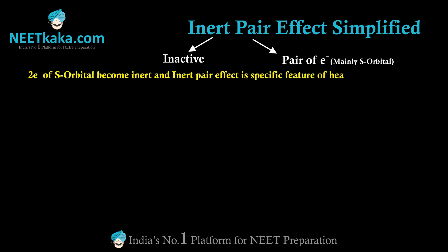The inert pair effect is a specific feature of heavy p-block metals. Remember these two keywords: heavy p-block metals, and s-electrons are inert. So why does it happen?